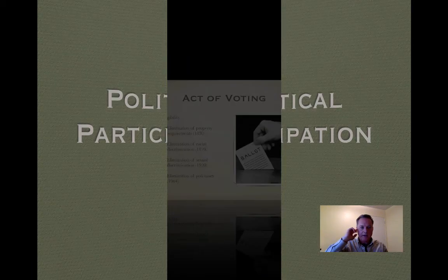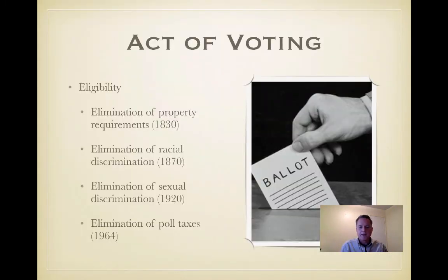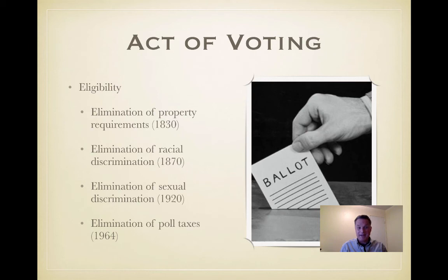A variety of factors have changed the composition of who's able to vote. Early on, property rights were a great deal for the founders and kept people from voting. But by 1830, virtually all property rights requirements had been eliminated. By 1870, racial discrimination in voting was ended by the 15th Amendment.